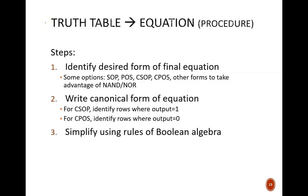Now let's work in the other direction. Given a truth table, find the Boolean equation. The first step of this procedure is to identify the desired final form of the equation.